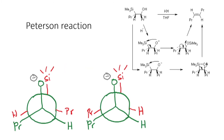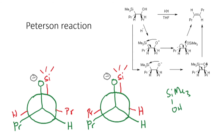The next reaction we are going to look at is the Peterson reaction. In the Peterson reaction, the reagents used are these silyl hydroxysilyl compounds, and the conditions are potassium hydroxide and THF. When you take this 2-silyl hydroxyl aliphatic compound, you end up with an olefin at this position — that is, there is a loss of SiMe3OH. Trimethylsilanol is lost and gives you an olefin.